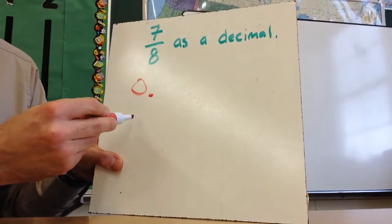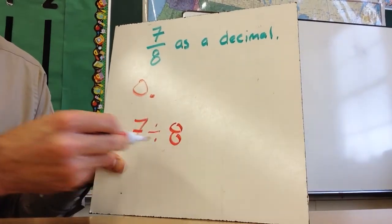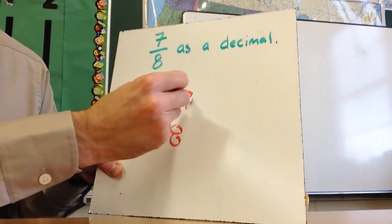What I want to do is I want to take my calculator, I'm going to type the number 7. I'm going to hit divided by and I'm going to type in 8. And I should get 0 point 875.